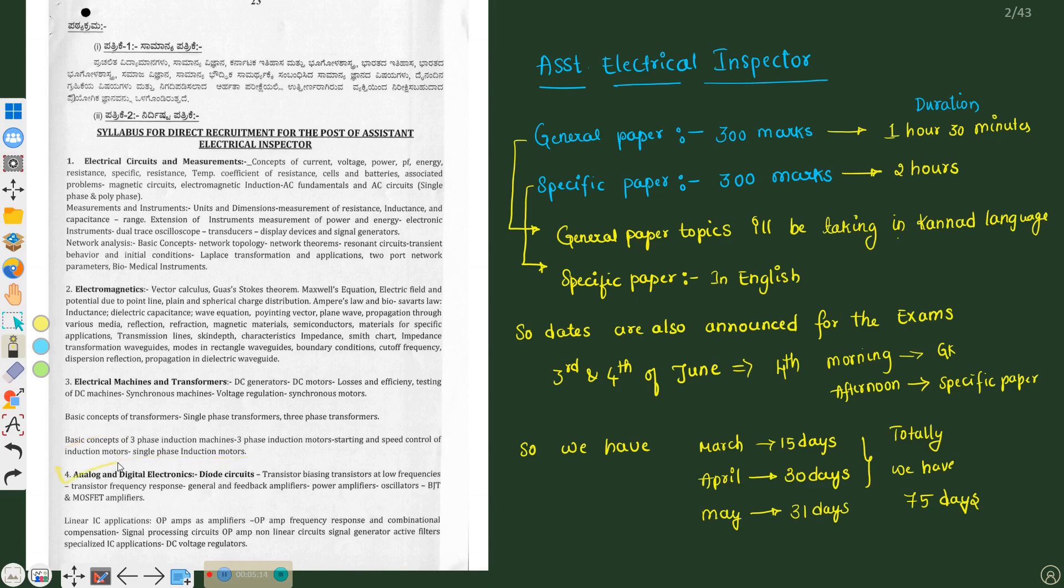If you talk about analog and digital electronics and diode circuits, we will be studying some clippers and clampers, power amplifiers, transistor biasing, oscillator, BJT, MOSFET amplifiers, and we will also study ICs, op-amps (operational amplifiers), frequency response, combinational compensation, signal processing, DC voltage regulators.